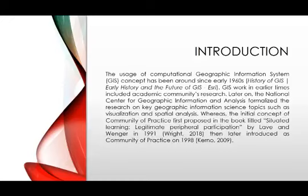For the introduction: the usage of computational geographic information system concepts has been around since the early 1950s. This work in earlier times included academic community research. Later on, the National Center of Geographic Information and Analysis formalized research on key geographic information science topics such as visualization and spatial analysis. The initial concept of community of practice was proposed in the book titled 'Situated Learning: Legitimate Peripheral Participation' by Lave and Wenger in 1991, and the author introduced it as community of practice in 1998.